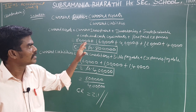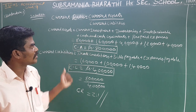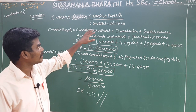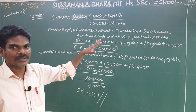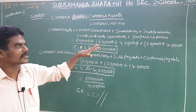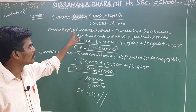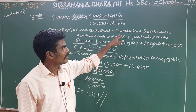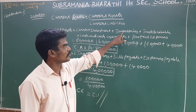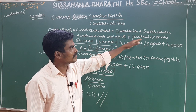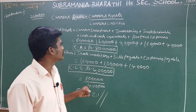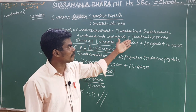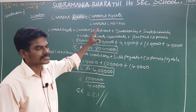We identify current assets and current liabilities separately. Current assets include current investment, inventories (also called stock), trade receivable, cash or cash equivalent, and prepaid expenses. Total current assets: 8 lakhs.